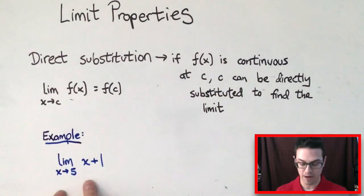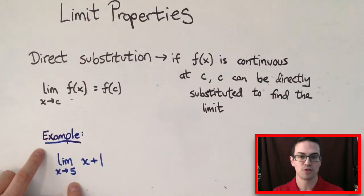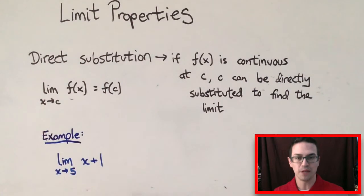So I have an example right here. It says the limit of X plus 1 as X gets closer to 5. So what we could do here is we can look at this 5 right here and think, okay, is this function right here continuous at 5?